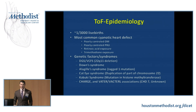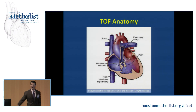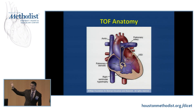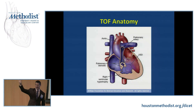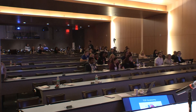It's a genetically mediated problem, and this is what it looks like in the unrepaired state. Does anybody know off the top of their head what all the Tetralogy components are? There are four things — just yell them out. Right ventricular hypertrophy.